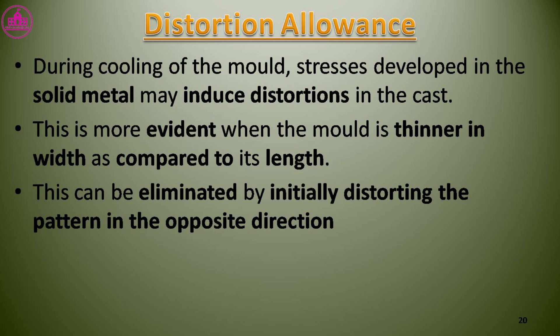Distortion allowance: during cooling of the mold, stress is developed and the solid metal may induce distortions in the cast. This is more evident when the mold is thinner in width compared to its length. This could be eliminated by initially distorting the pattern in the opposite direction.